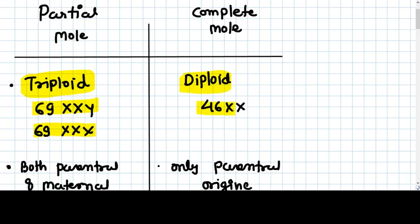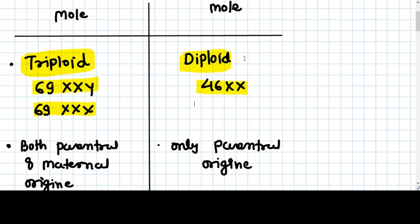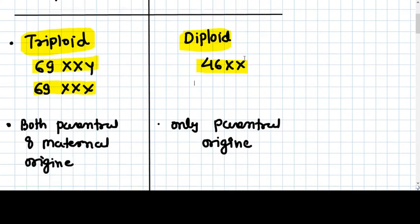In most cases, 90% of complete moles are 46XX. In partial mole, both parental and maternal origin genetic material is present, but in complete mole, only parental origin genetic material is there.